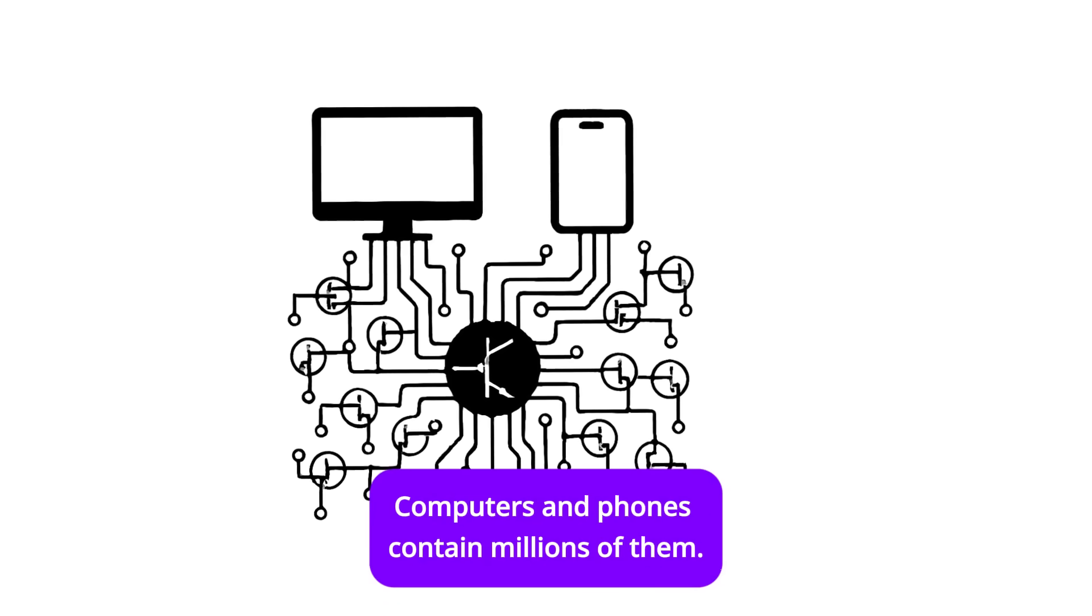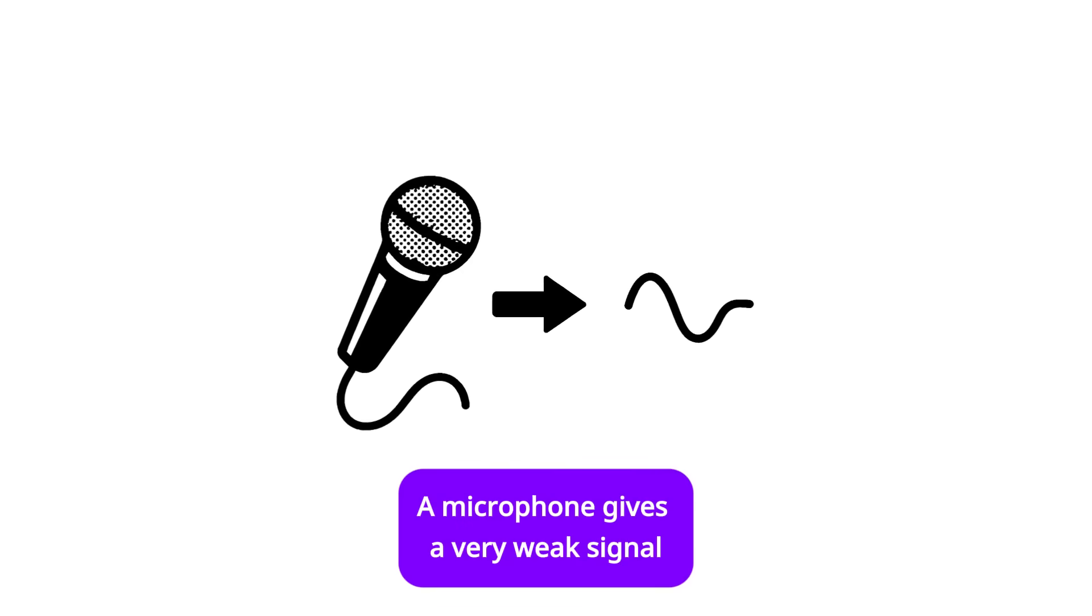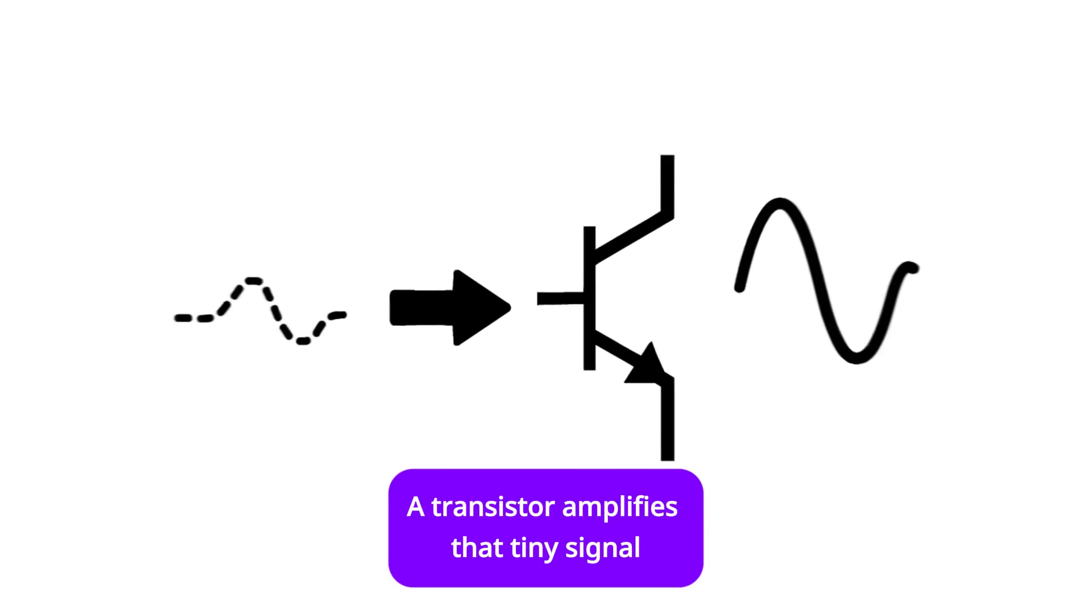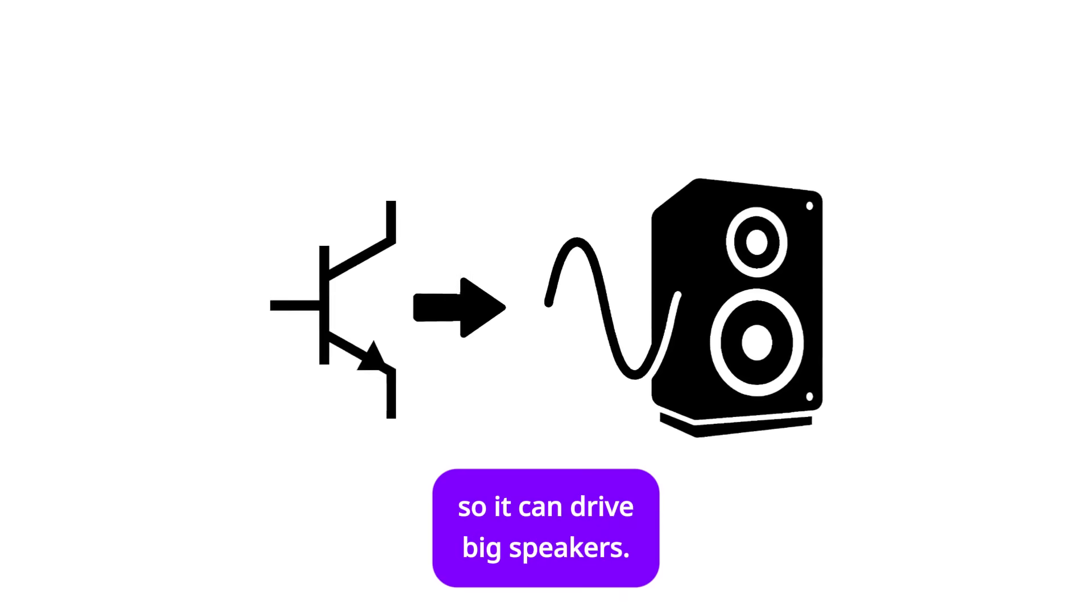Computers and phones contain millions of them. Everyday example: a microphone gives a very weak signal. A transistor amplifies that tiny signal so it can drive big speakers.